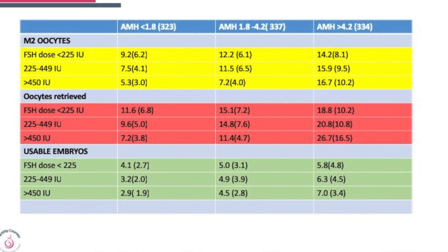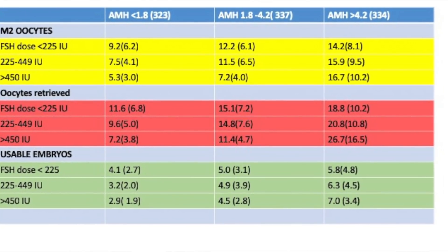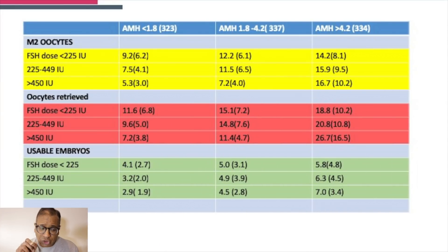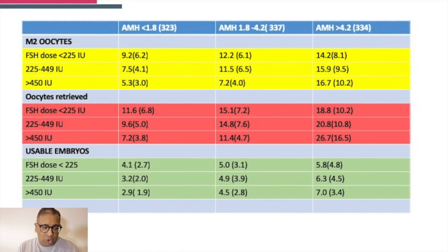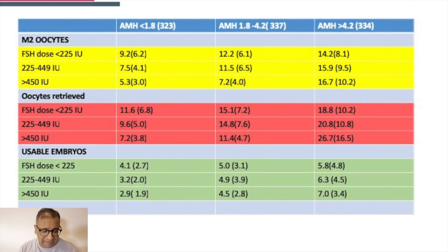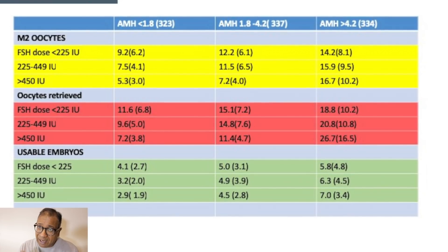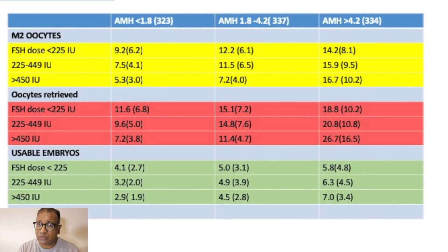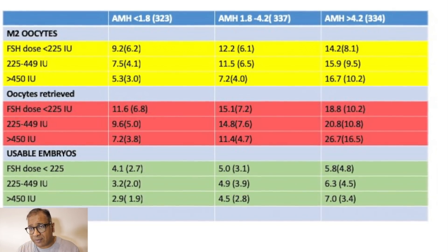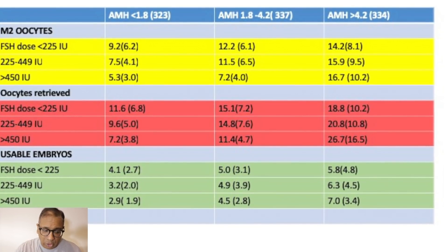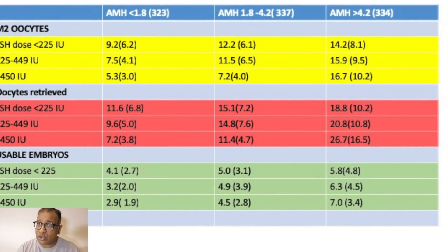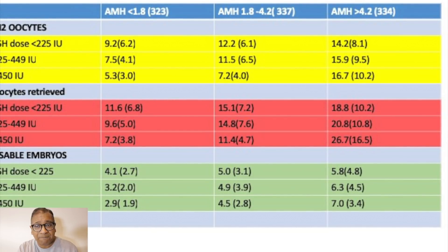Looking at the picture here, in Group 1 and Group 2, as FSH doses went higher from 225 IU, the number of mature oocytes (M2 oocytes) steadily decreased. The number of oocytes obtained also decreased, and the number of usable embryos also decreased. In Group 3 — high AMH — the lower the dose, the fewer oocytes and embryos obtained. But as the dose increased, especially in cases where the FSH threshold was very high, the number of oocytes and embryos steadily increased.